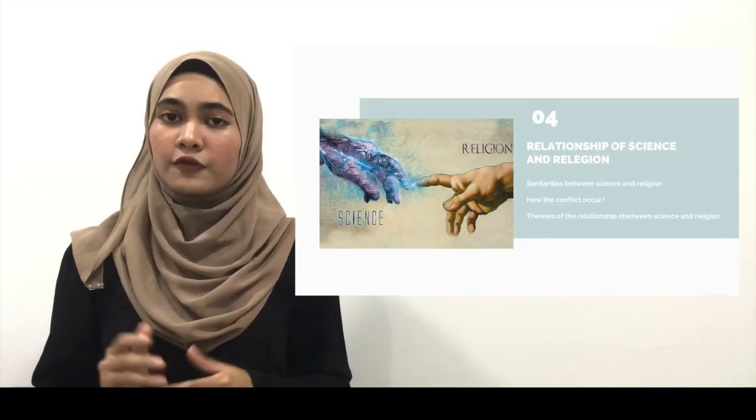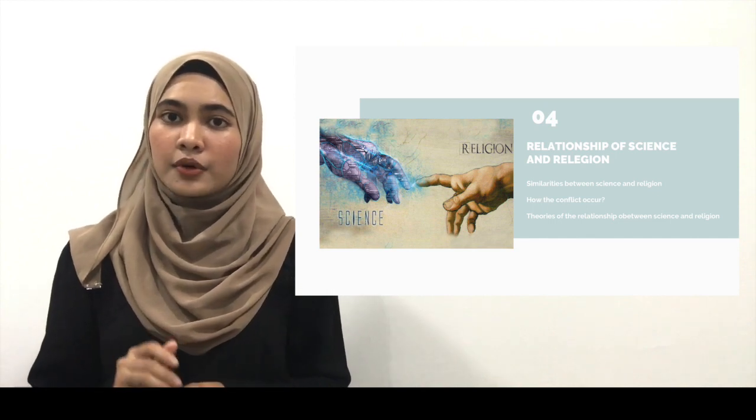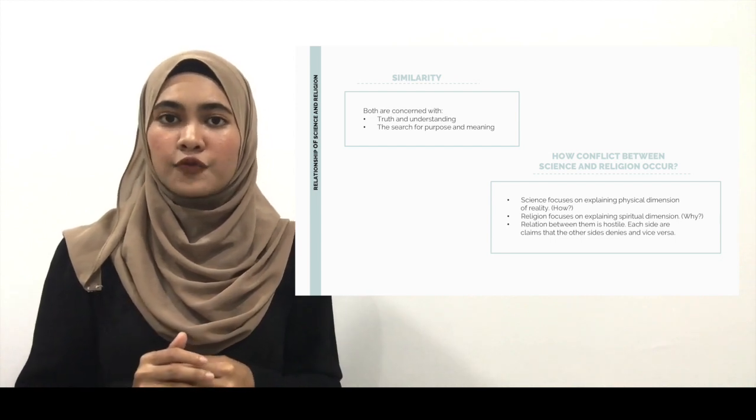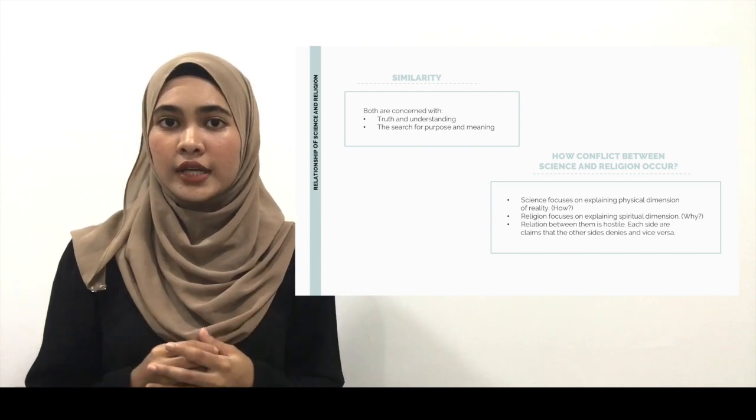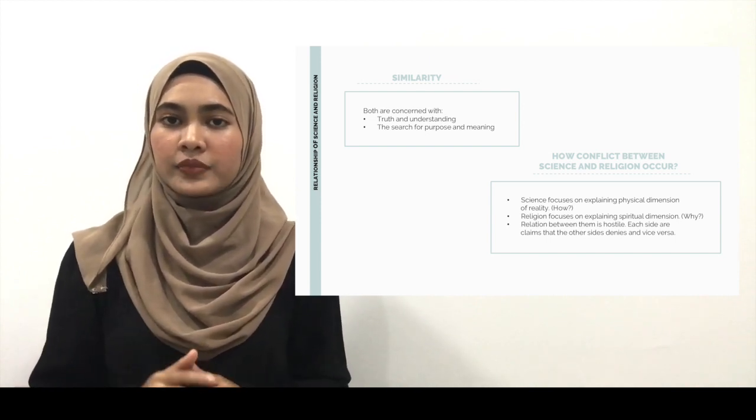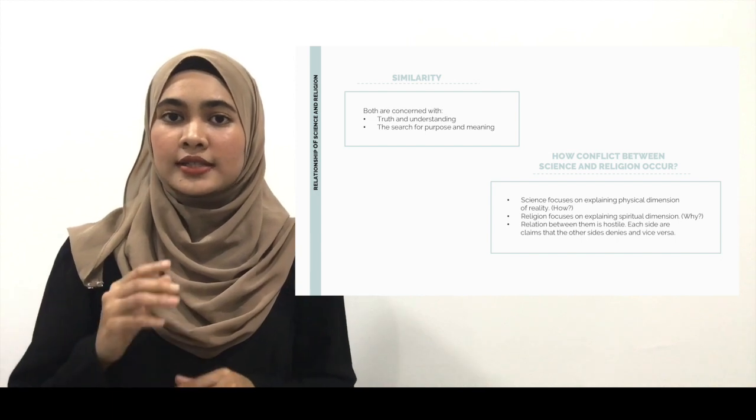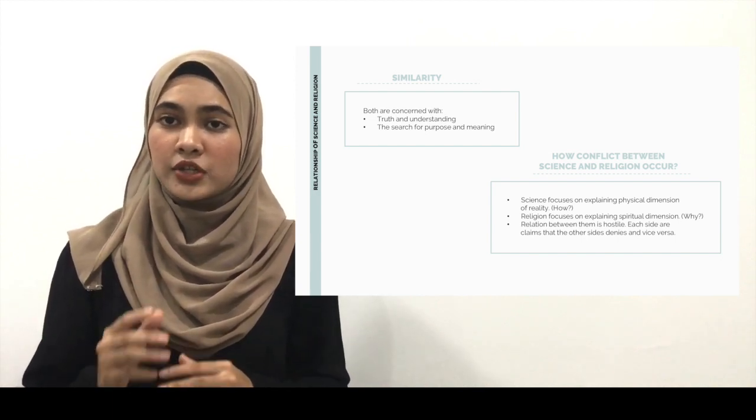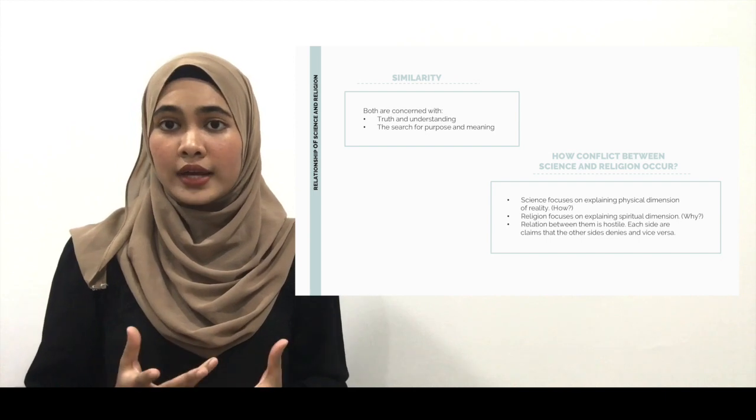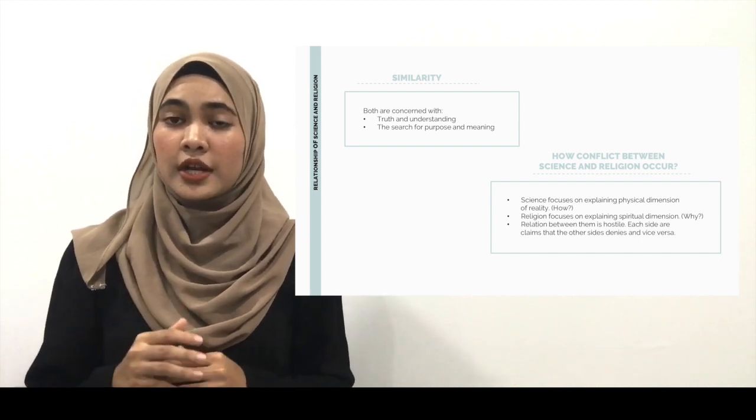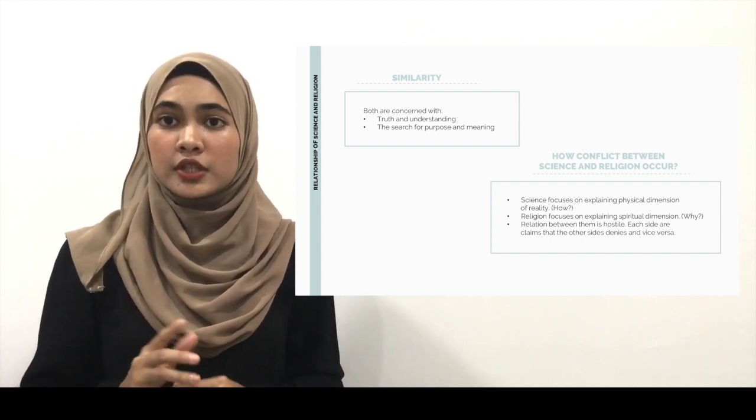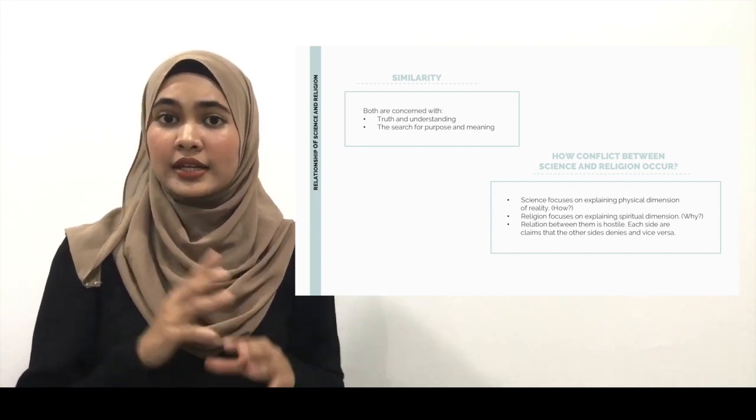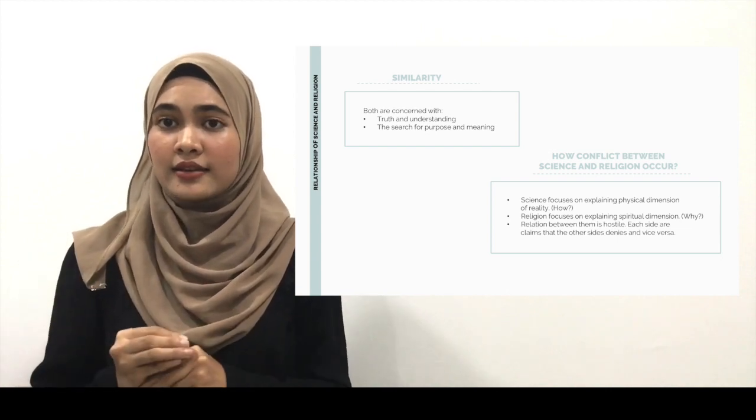The similarity of science and religion: both are concerned with truth and understanding, and also the search for purpose and meaning. Next, we will look at how conflict between science and religion occurs. It is because science focuses on explaining the physical dimension of reality while religion focuses on explaining the spiritual dimension, so the relation between them is hostile. Each side claims that the other side is wrong and vice versa.